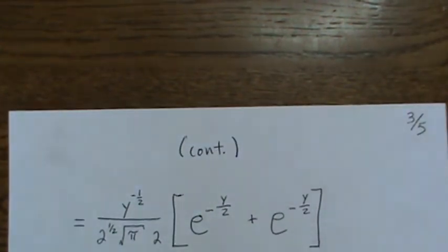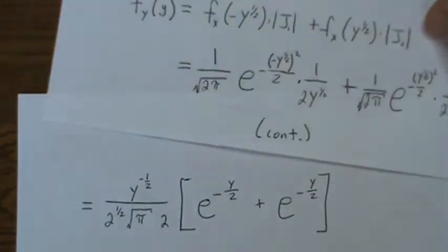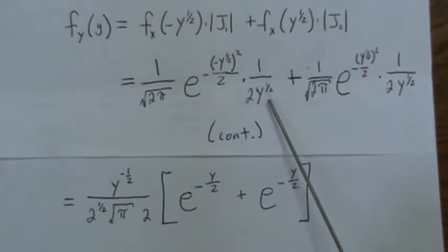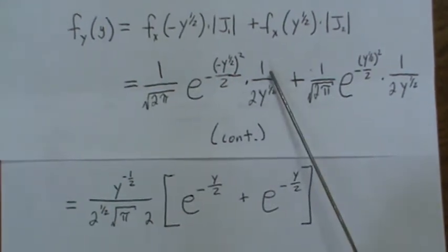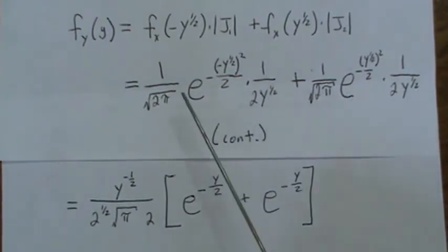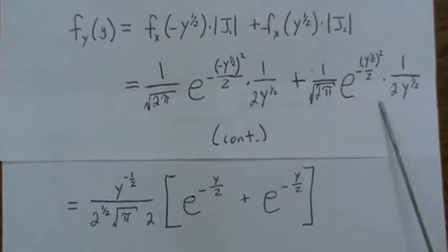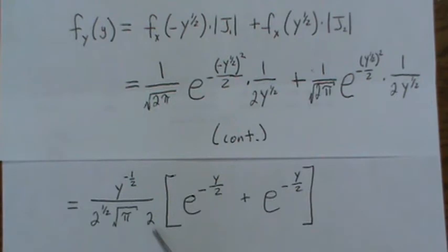And we end up with this. So I have simplified it. I took this Y to the one-half, took it to the top. Same here, brought it out, pulled it down. I took 2 to the one-half in both and pulled it out. And square root of π, pulled it out. There is this extra 2, which I pulled out.